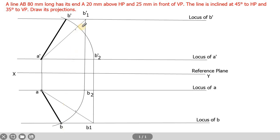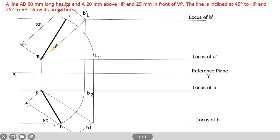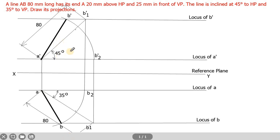Now the dimensions should be marked as per the question. A'B1' is the true length of the line — that is 80mm, so mark that as the true length. Similarly, AB1 is the true length, so mark this as 80mm. The HP inclination drawn as 45 degrees should be marked here — we notate HP inclination as theta, so theta is 45 degrees. The VP inclination is 35 degrees — notated as phi — so phi is 35 degrees. The front view angle is noted as alpha, and the top view angle is noted as beta.